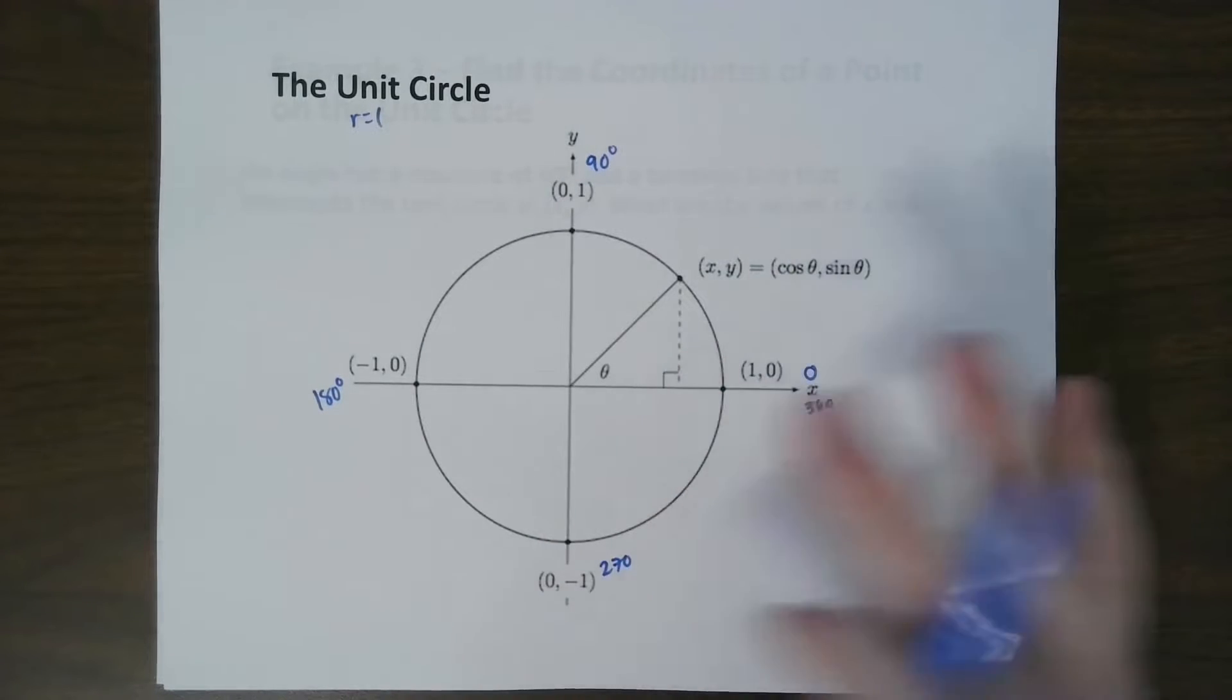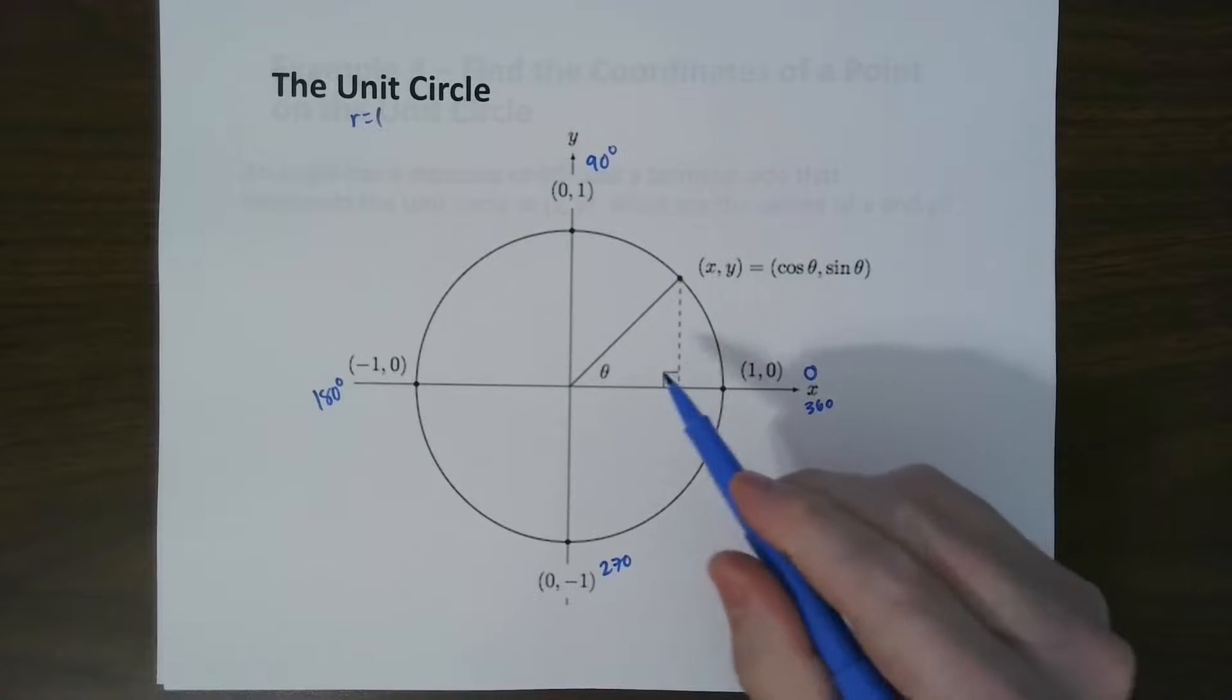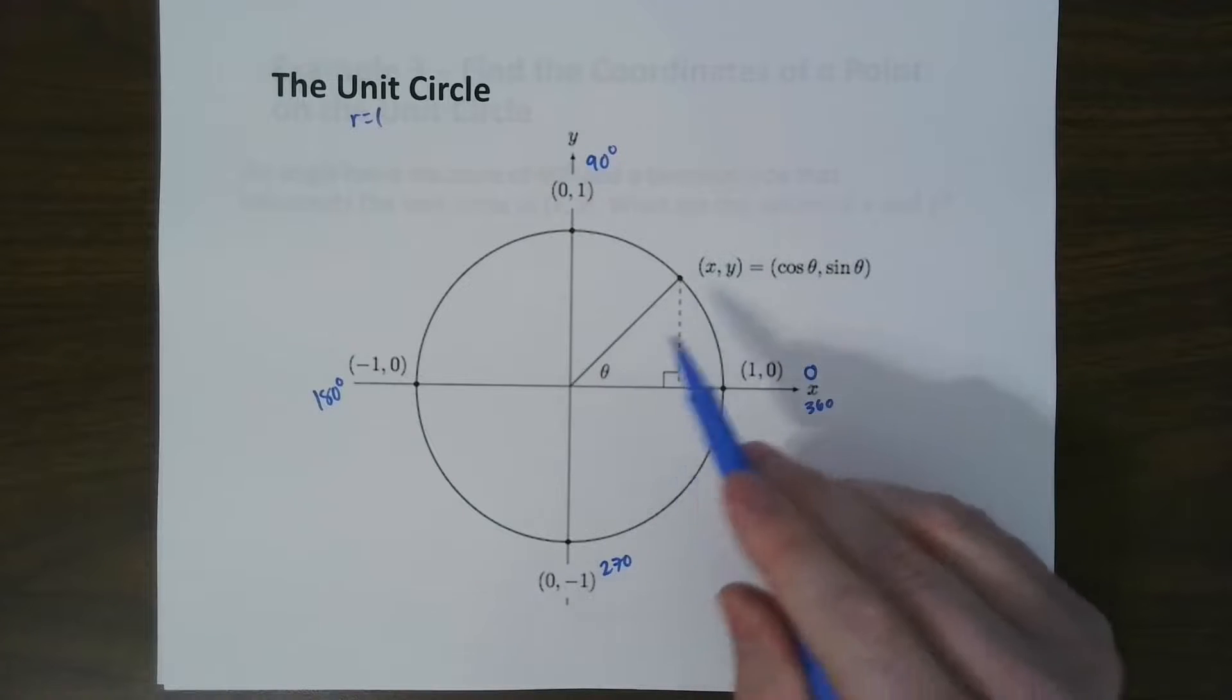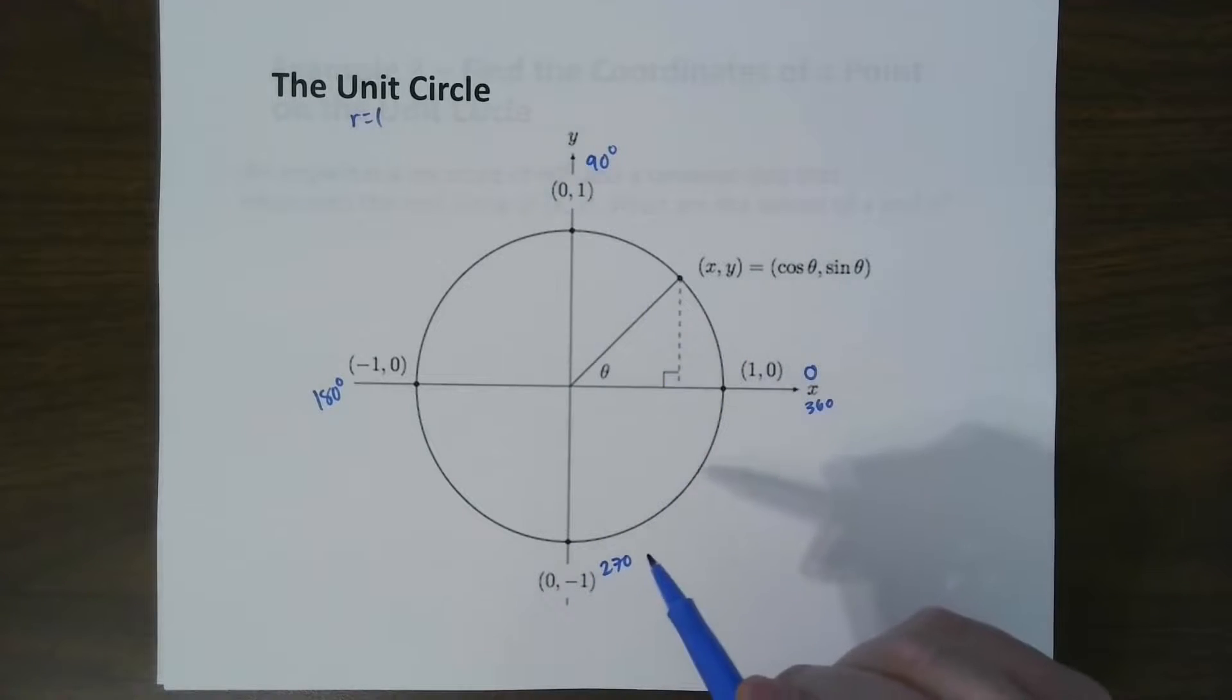So if we take a look at all those, that's basically how it goes. Now, one thing you need to know is any angle here, x is the cosine of that angle, and y is the sine of that angle for the coordinates.